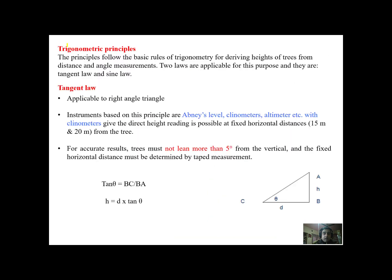Now we have trigonometric principles in addition to the principle of similar triangles which is based on tangent law and sine law. In a right angle triangle you know that hypotenuse square is equal to base square plus altitude square.